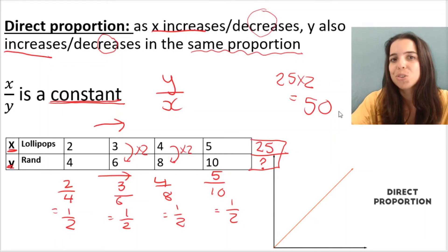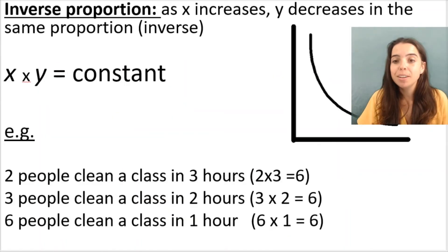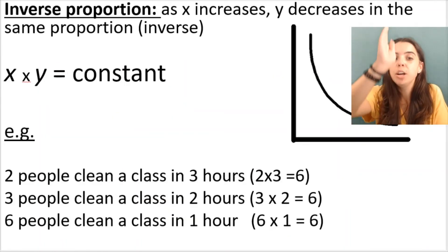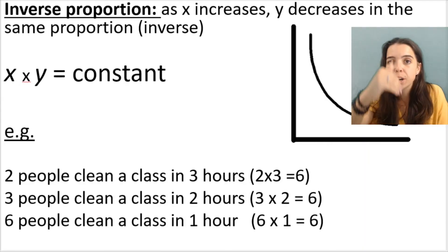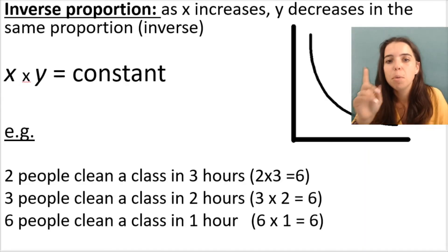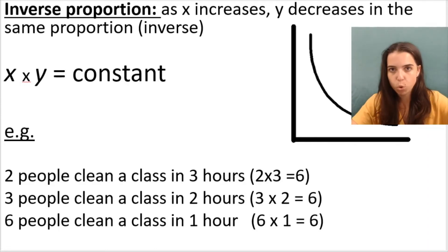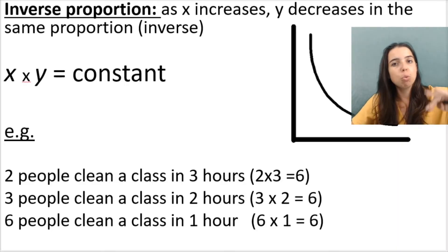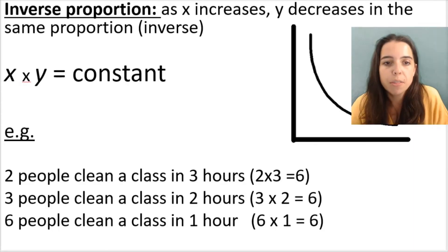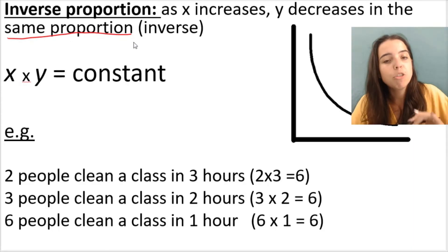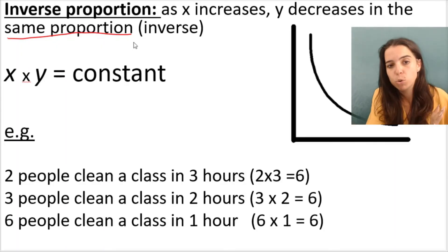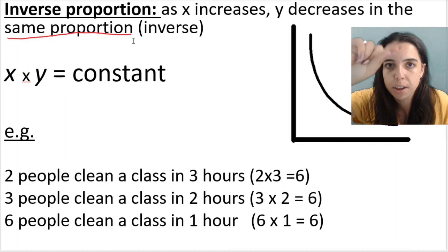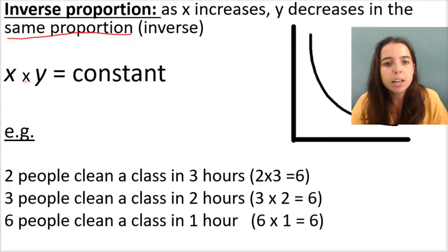Let's take a look at inverse proportion. Remember, inverse proportion is as the one variable increases, the other variable decreases — they do the opposite, but they do so by the same proportion. So if the one variable doubles, the other variable will halve. If the one variable gets three times bigger, the other one will get three times smaller. That's what I mean by the same proportion. And remember, for direct proportion it was one variable divided by the other that was constant; here it's the one variable multiplied by the other that is constant.